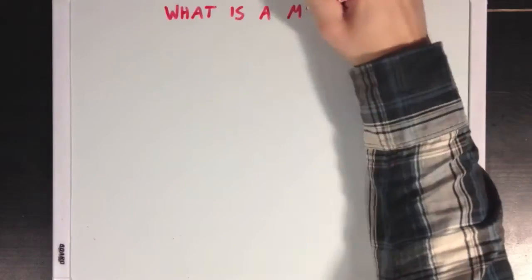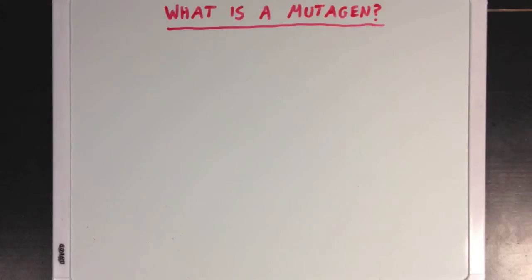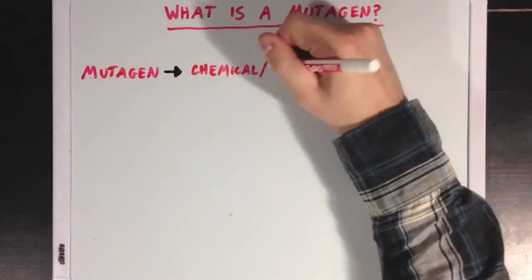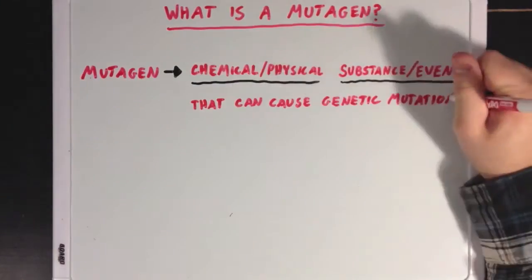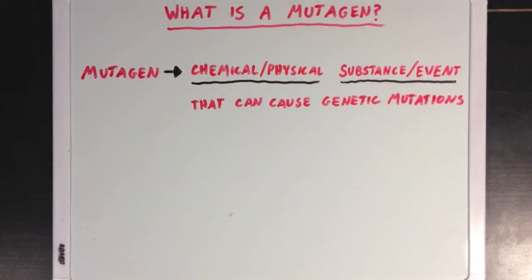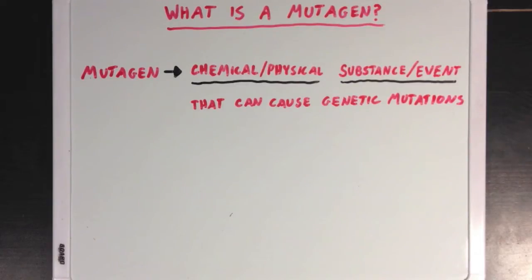So what is a mutagen? A mutagen is any chemical substance or physical event that can cause genetic mutations. Chemical substances, like certain poisons, could be mutagens, or physical events, like UV light or different kinds of radiation, could also be mutagenic. We classify mutagens into two different categories.